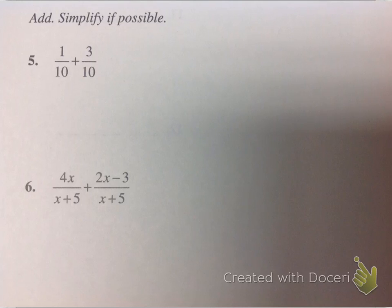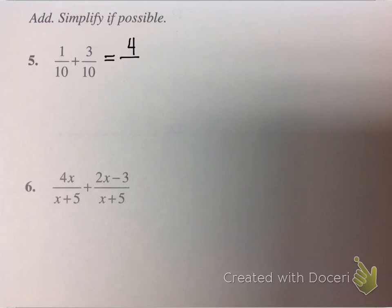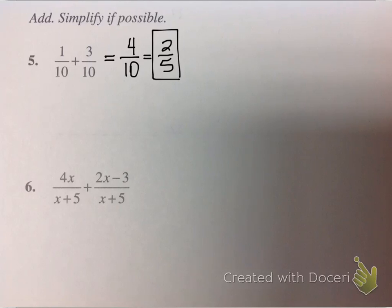The first one: we have 1 tenth plus 3 tenths. Easy enough — there are no variables involved and we have common denominators. So we get 1 plus 3 is 4, keep your denominator of 10. That can be reduced — 2 can go into both — so that's really going to be 2 fifths. The process will be the same when we start putting in variables.